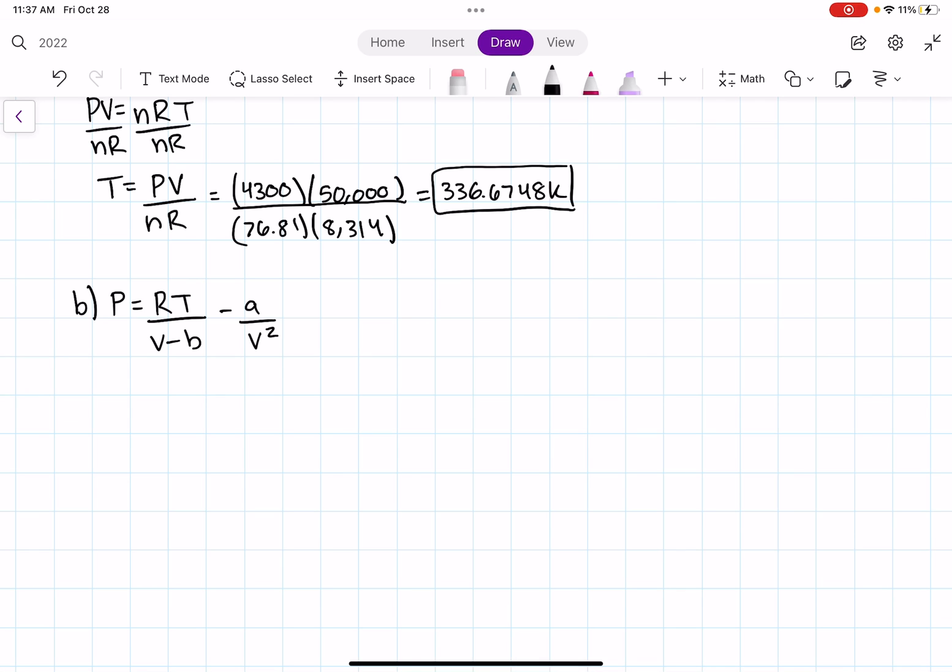Let's go ahead and rewrite the stuff that we know. We know that our pressure is equal to 4300 kilopascals. We know that our mass is equal to 2,000 grams. We know that our volume is equal to 50,000 centimeters cubed. And I'm going to go ahead and rewrite my R value.